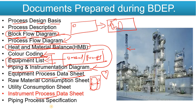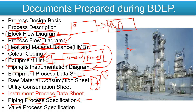Then you will prepare the Piping Process Specification. In the plant there will be lots of pipes with different applications, different materials of construction (MOC), different operating temperatures, design temperatures, operating pressures, and design pressures. All that information is provided in the Piping Process Specification.